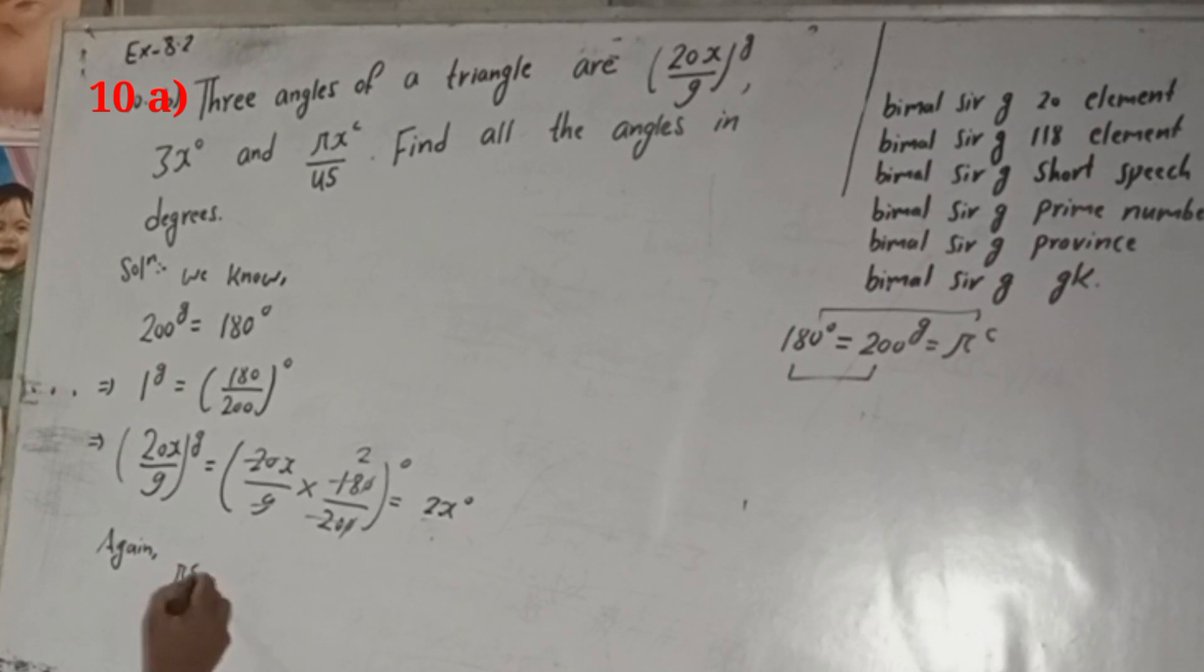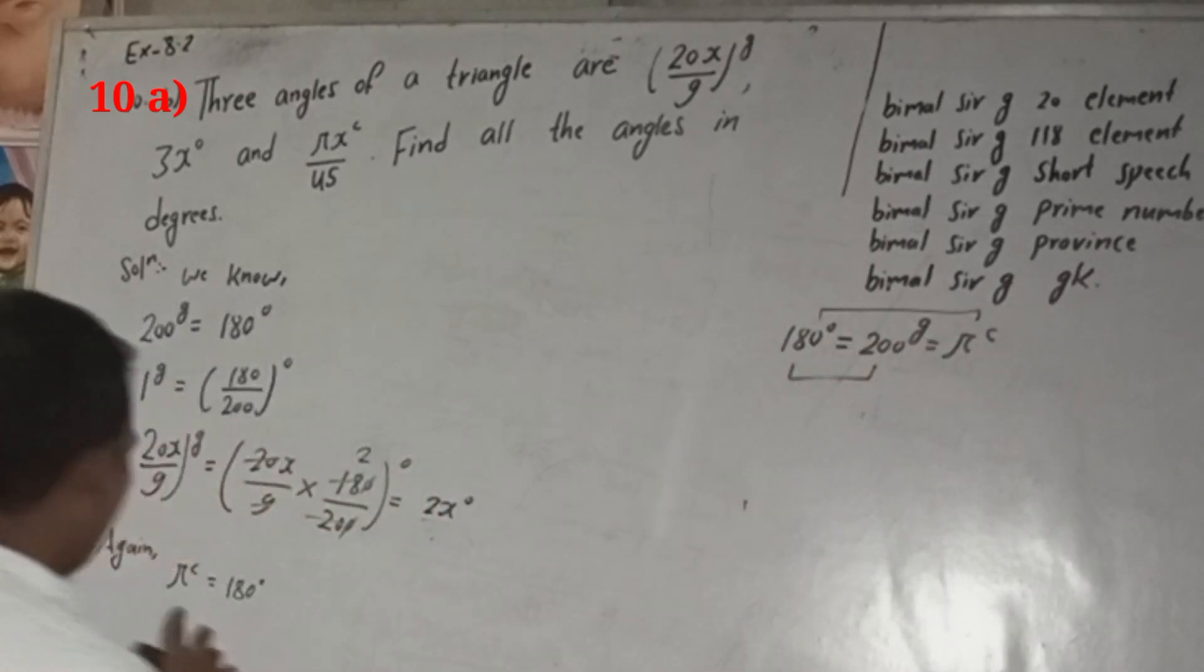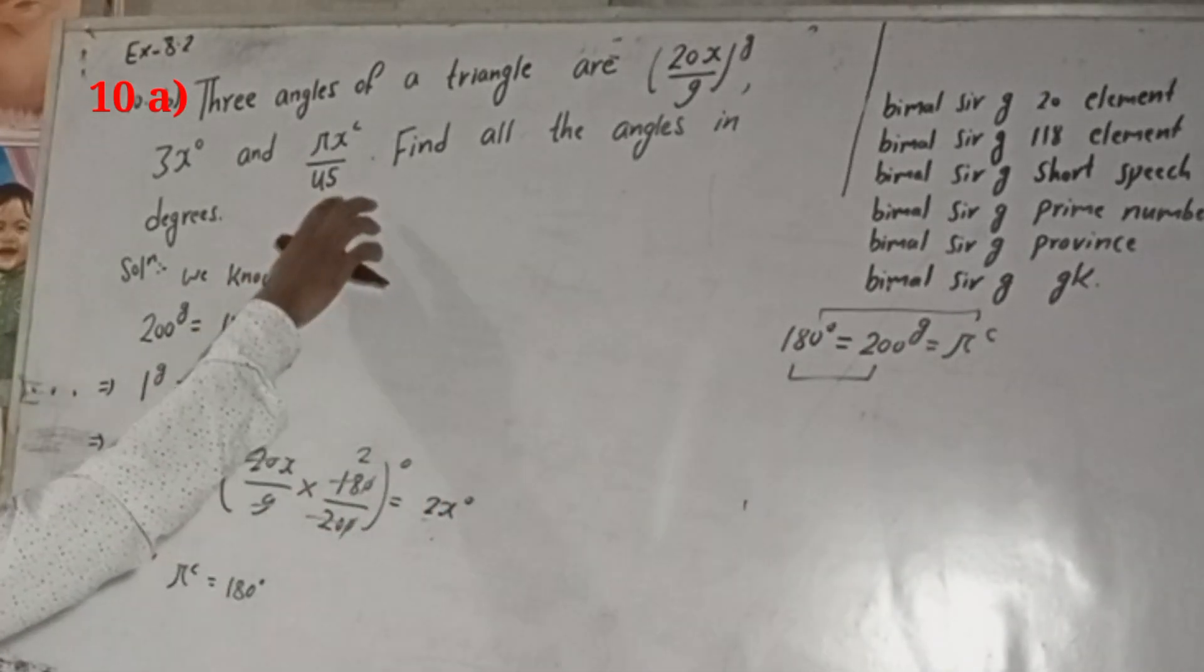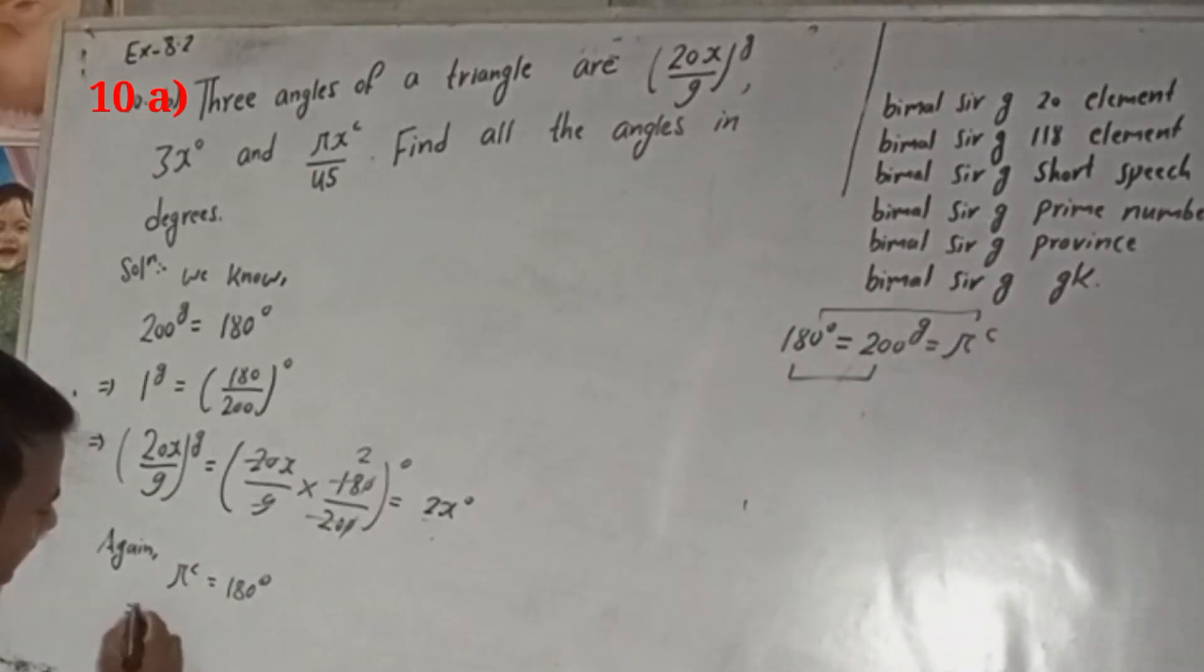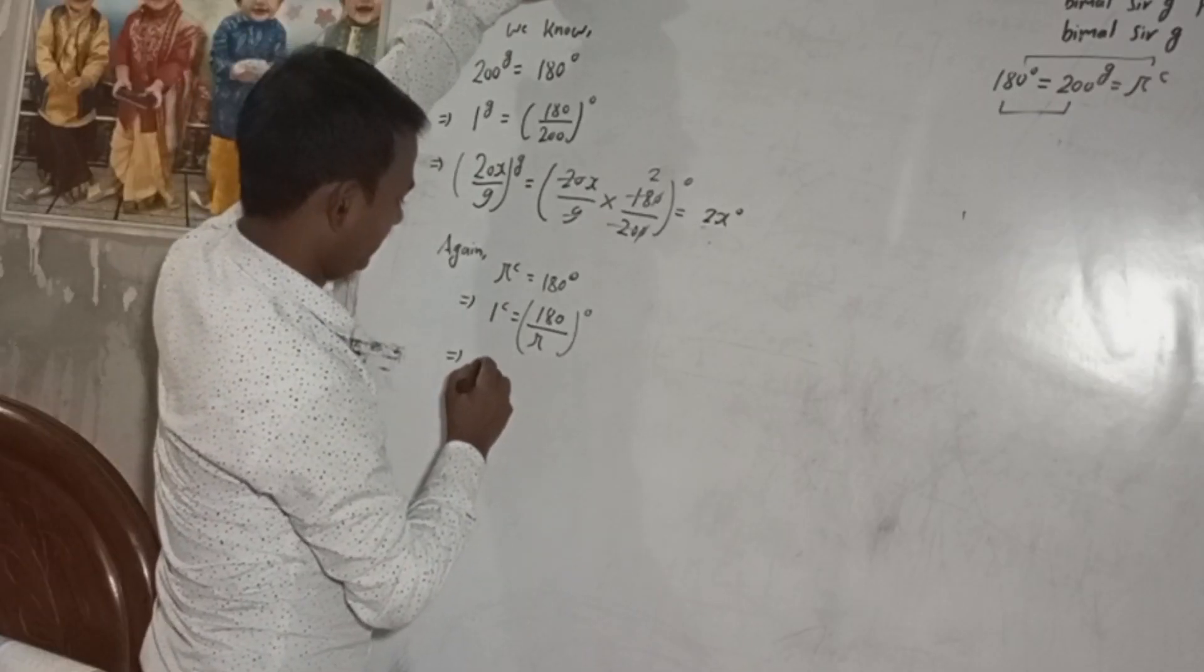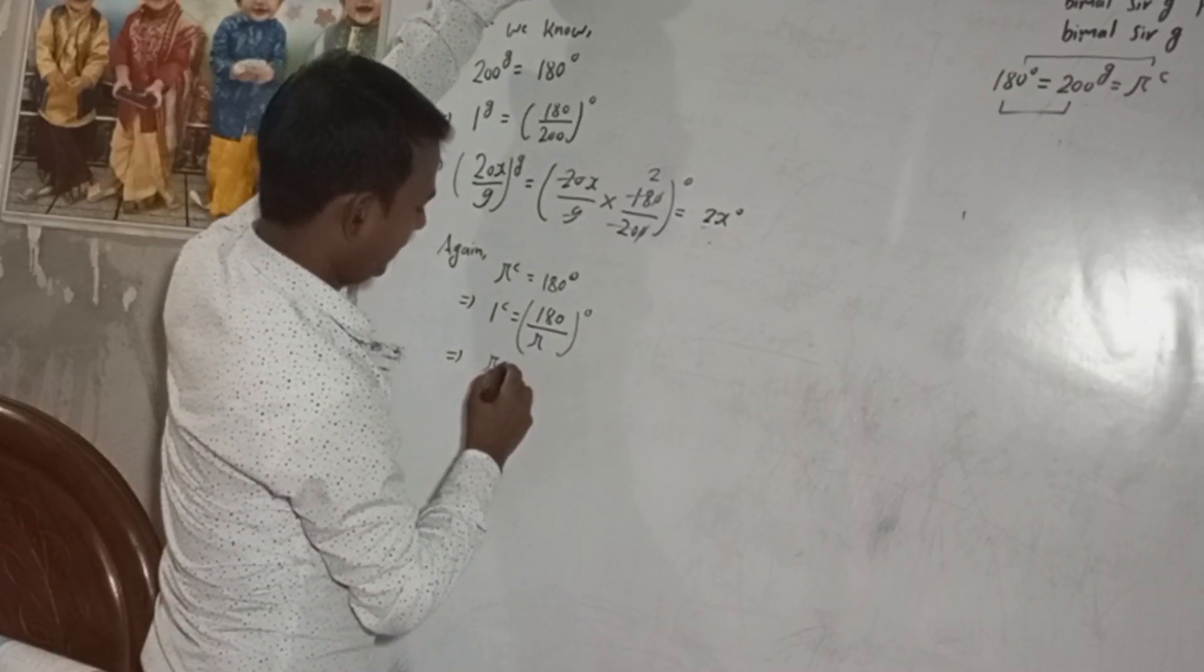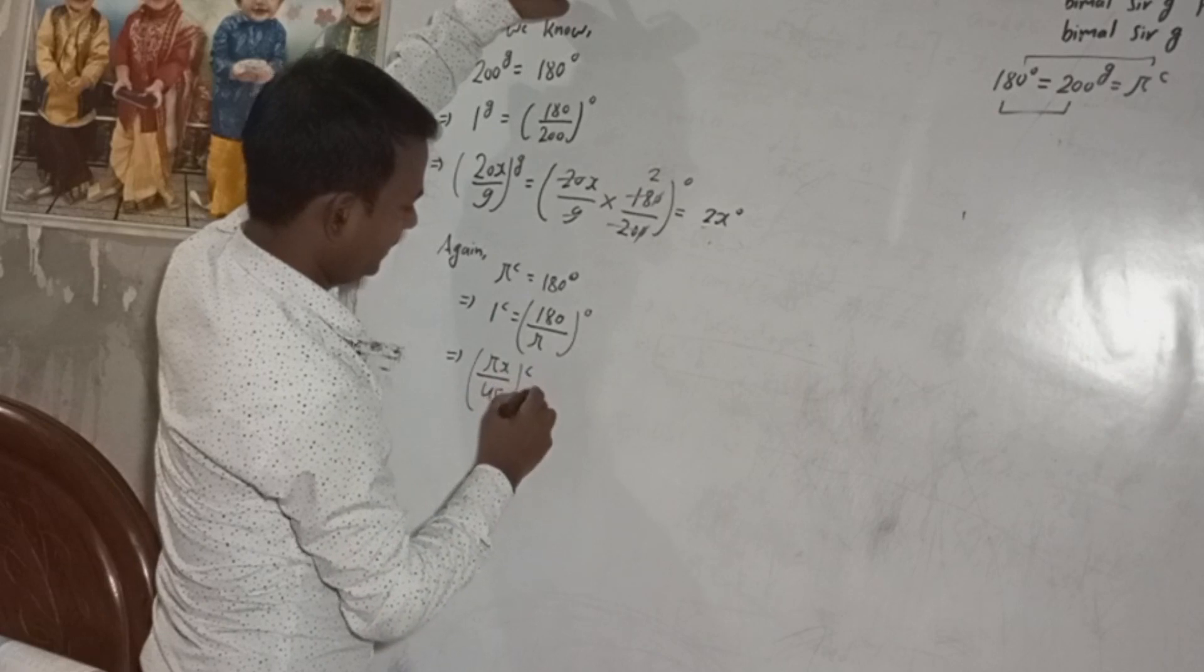π radian is equal to 180 degree. Why we have to change this radian to degree? So we write here radian first, and then this. That means 1 radian is equal to 180 by π, and then this degree implies, so 1 radian is equal to this much.